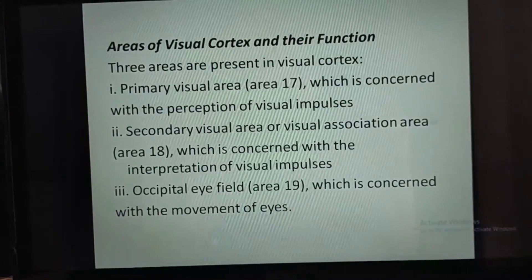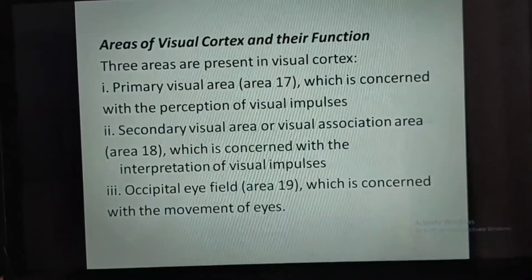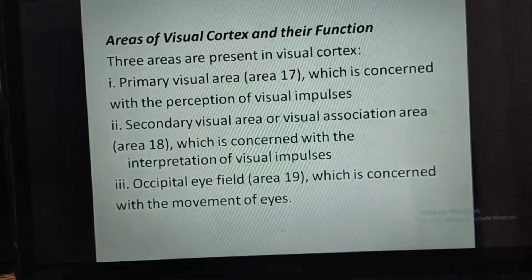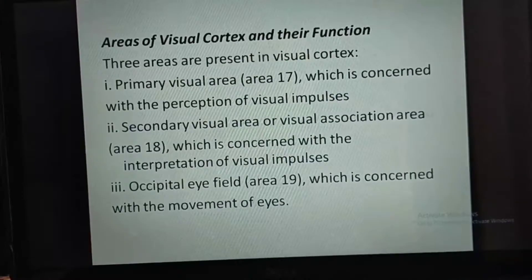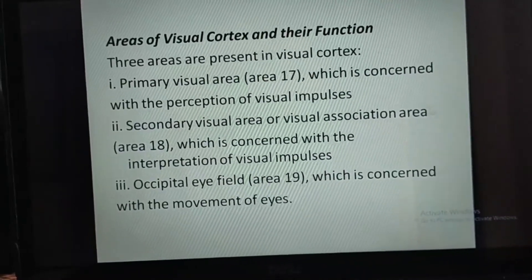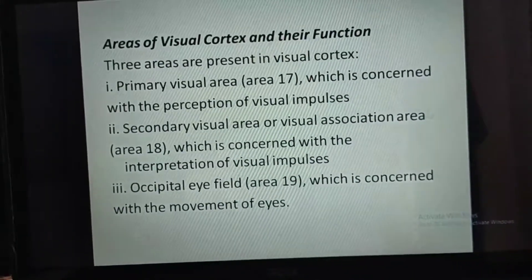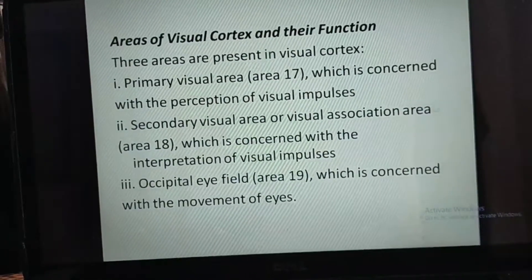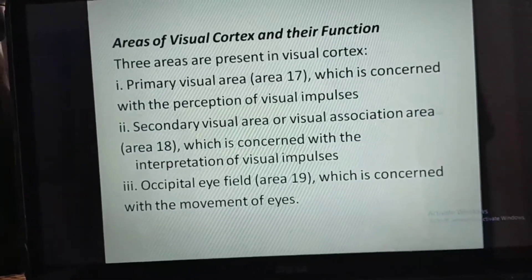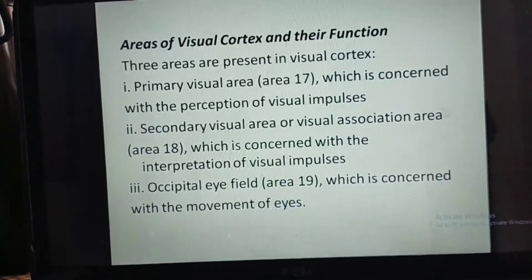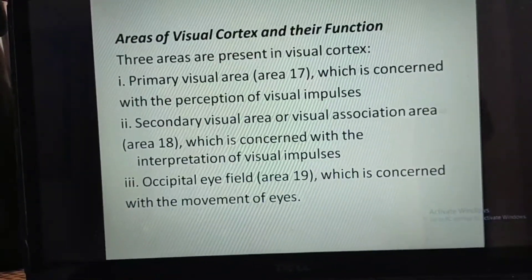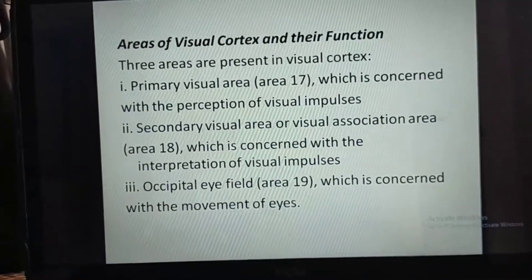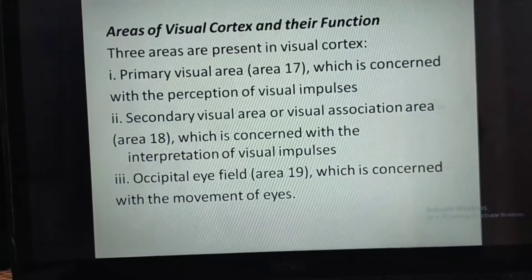Three areas are present in the visual cortex. First is the primary visual area, which is area 17, concerned with the perception of visual impulses. Second is the secondary visual area or visual association area, which is area 18, concerned with the interpretation of visual impulses. Third is the occipital eye field, which is area 19, concerned with the movement of the eyes.